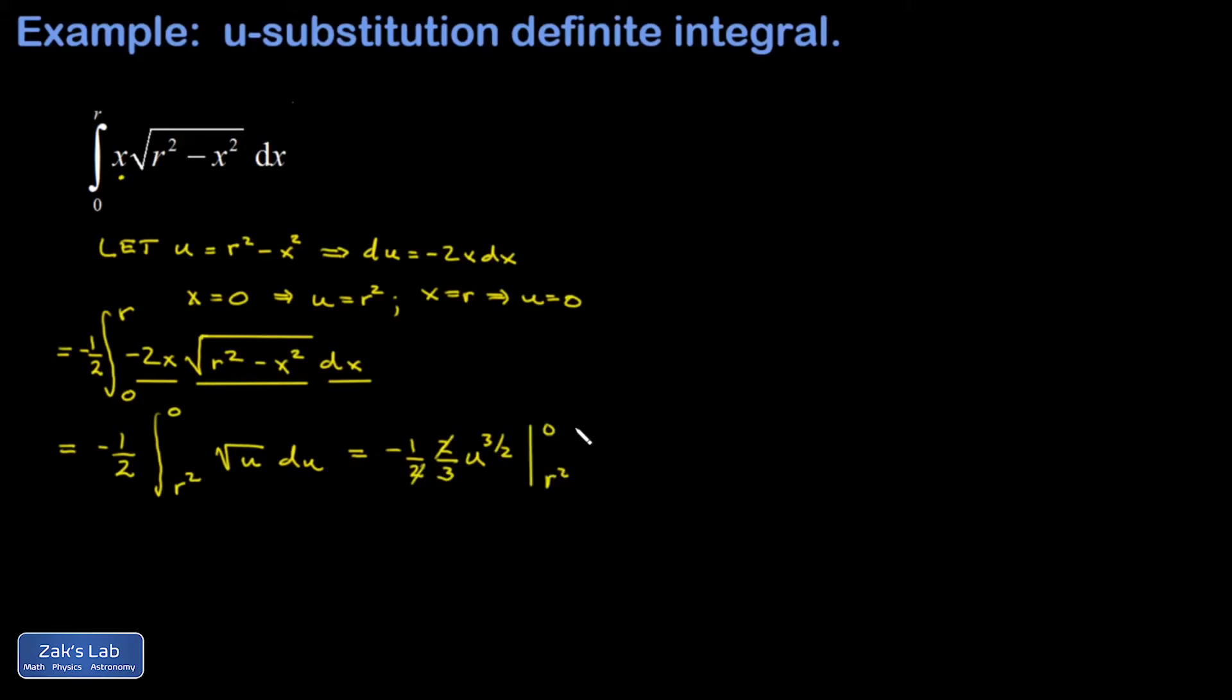I'm evaluating from r squared to zero. When I plug in the upper limit u equals zero I get zero, then I subtract what I get by plugging in the lower limit. That's going to kill this minus sign out in front, so I have a positive one third r squared to the three halves.